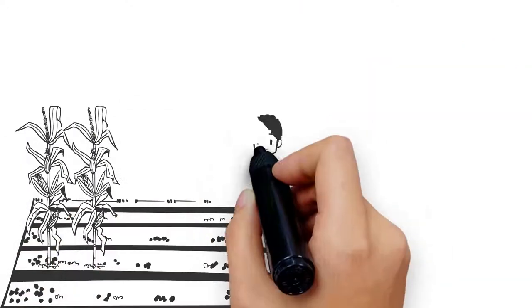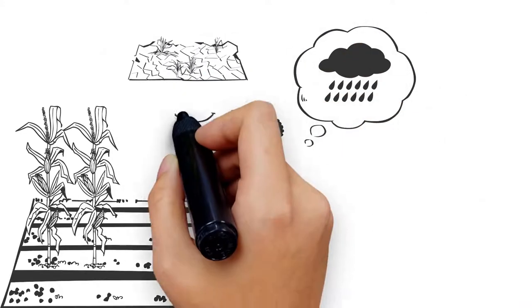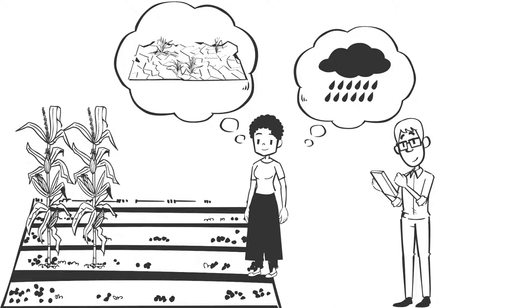An understanding of the constraints that smallholder farmers face when building more resilient farming systems is needed for an interdisciplinary, multi-level approach to managing soil health. Engaging communities in collecting this information is key.